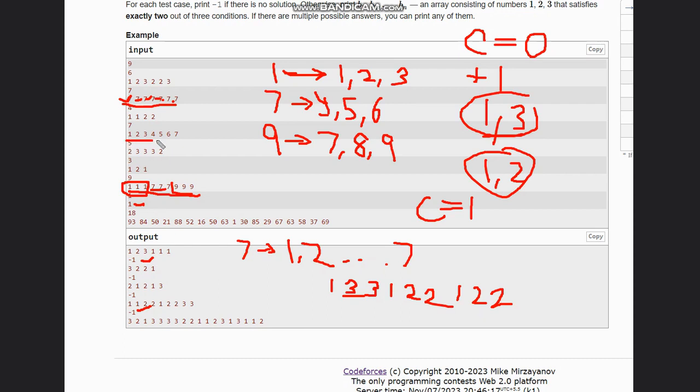once, like in case of 1, 2, 3, 4, 5, 6, 7 where each number is mapped exactly to only one number, then also we will output minus one. And in case of only one number, we definitely output minus one.